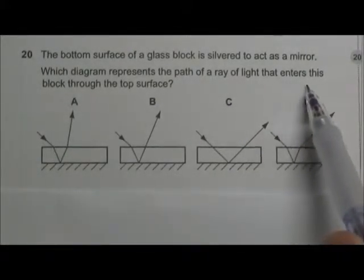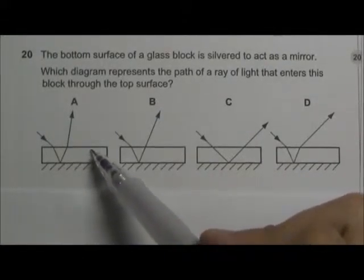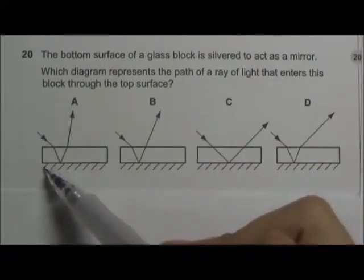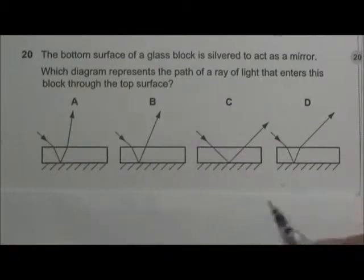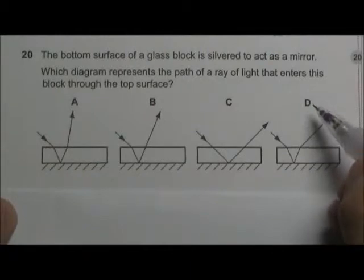We are asked which diagram represents the path of a ray when it enters this block. This block is made up of a glass block and a reflecting silver surface. So what happens will be something in option D.